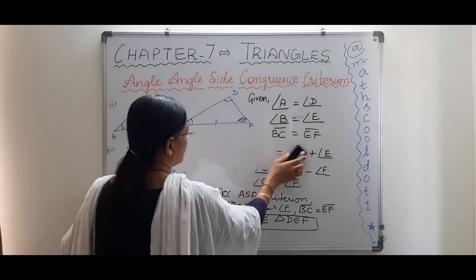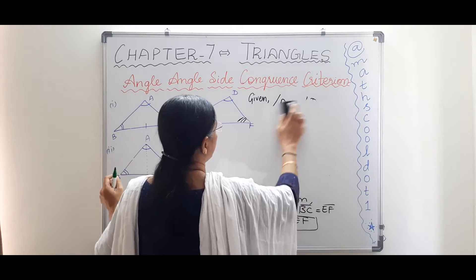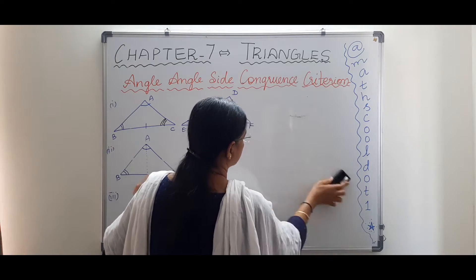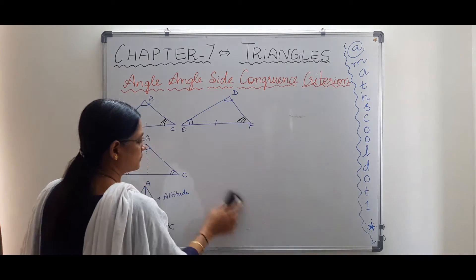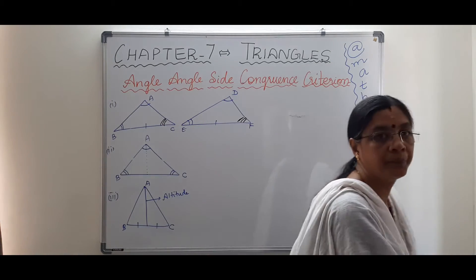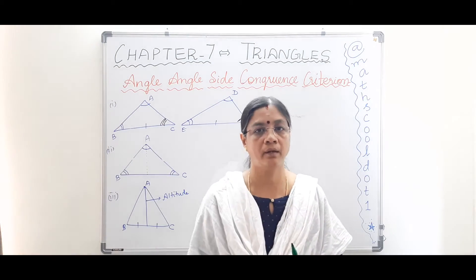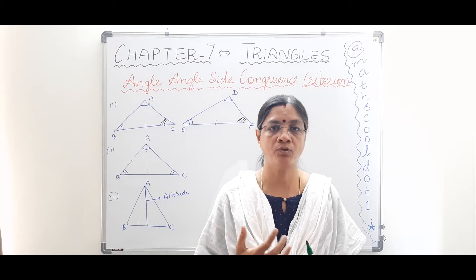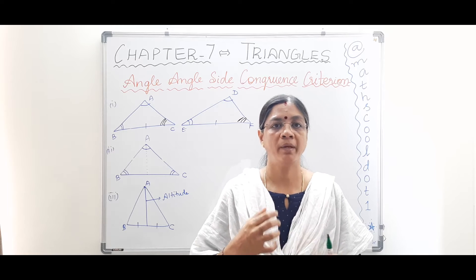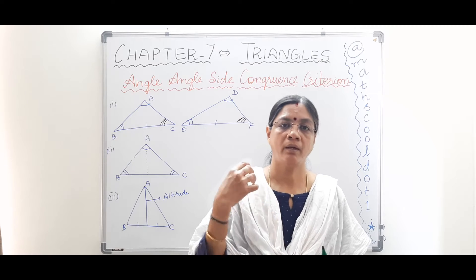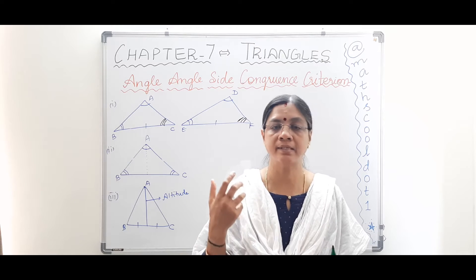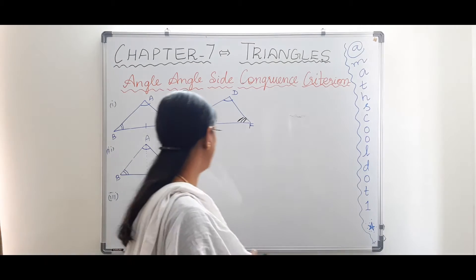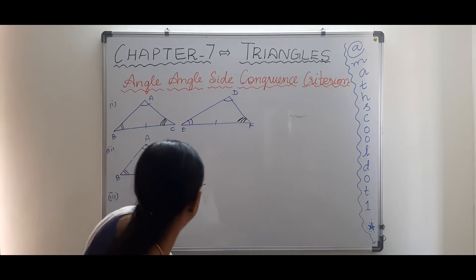We have proved the AAS criterion with the help of Angle-Side-Angle. After understanding all five congruency criteria, solving congruency in triangles becomes much easier — you can use ASA or AAS, and anything is possible once you spot just two triangles in the diagram. Now let's move on to the next problem.